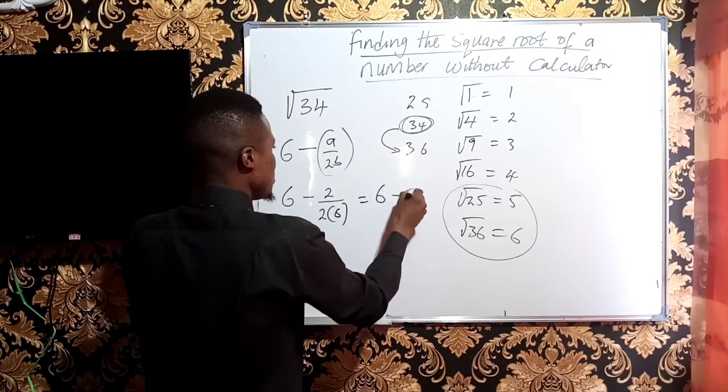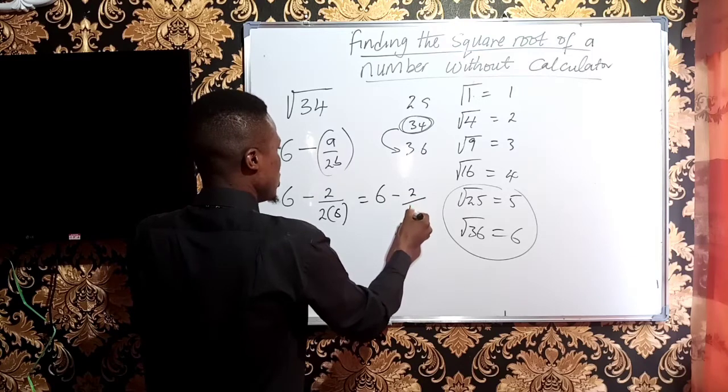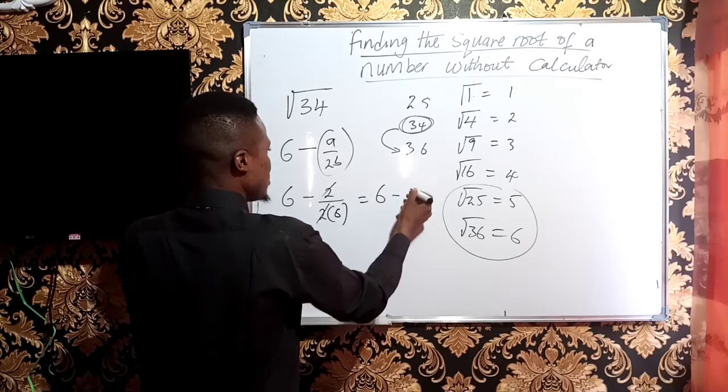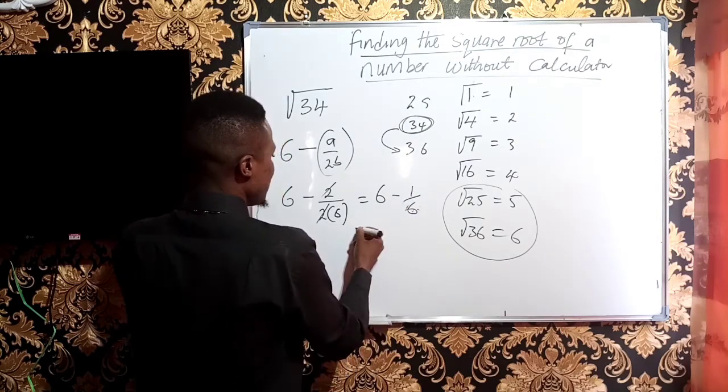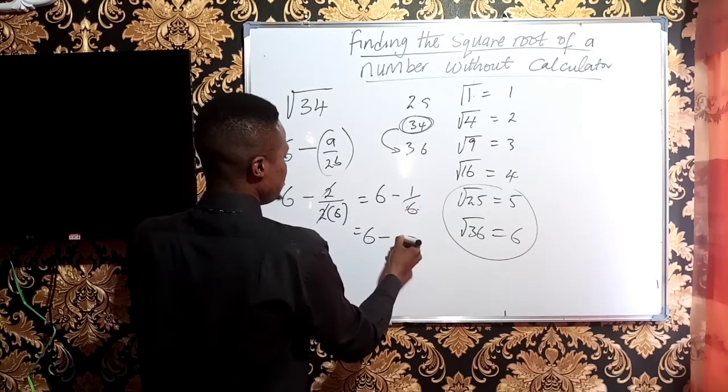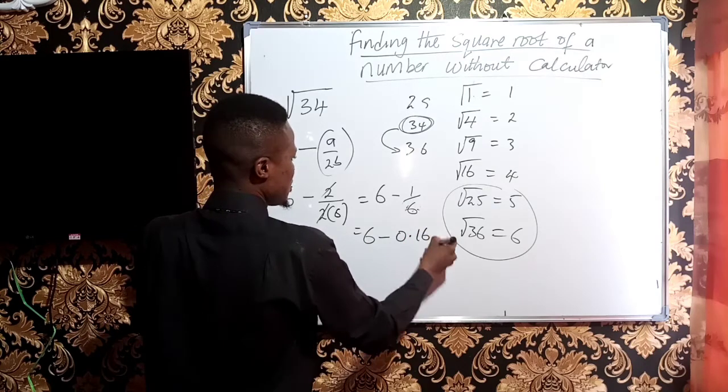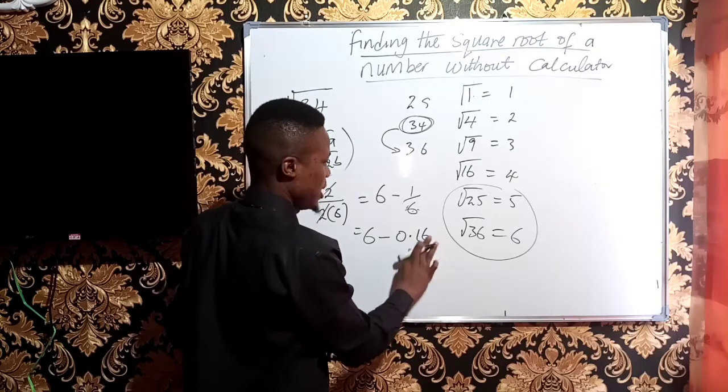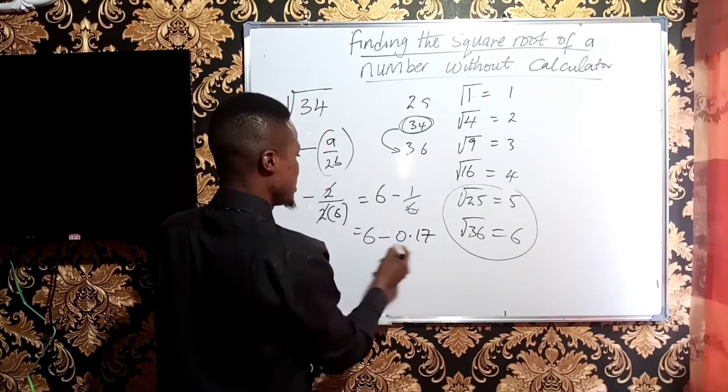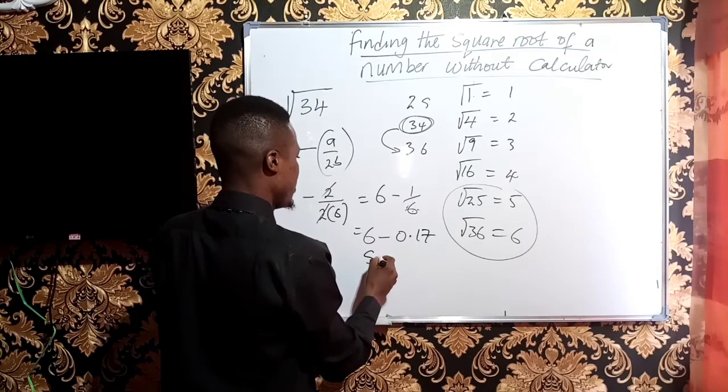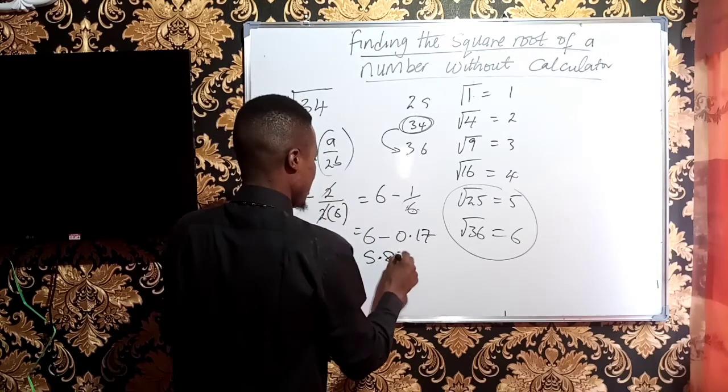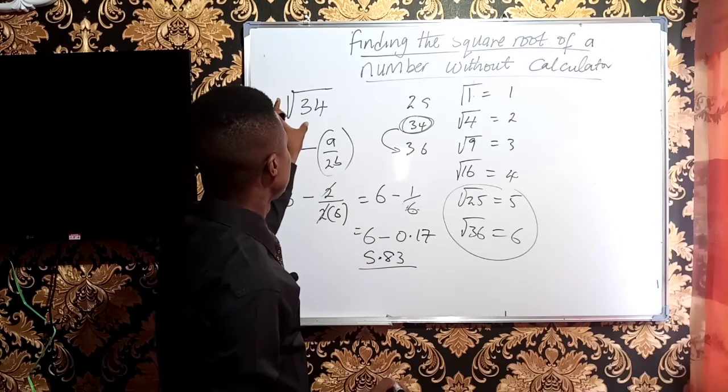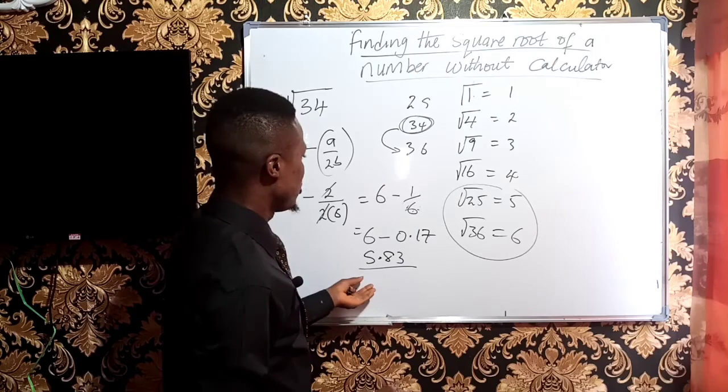So this will give you 6 minus 2 over 12. Or rather, when we simplify, we cancel the 2 to have 6 minus 1 over 6. And 1 over 6 is something like 0.16... I can call it 0.17, approximately. So when I subtract this, I will get 5.83. This should be the answer. Therefore, the square root of 34 is 5.83.